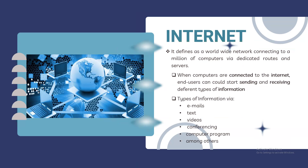Let's discuss the internet. Internet is defined as an abbreviation for 'interconnected network' — connecting millions of computers. When computers are connected through the internet, end users can start sending and receiving different types of information such as emails, text, videos, conferencing, and computer programs. It is a global computer network providing a variety of information and communication facilities, consisting of communication protocols that link together thousands of individual networks, allowing exchange of information between two or more computer networks.